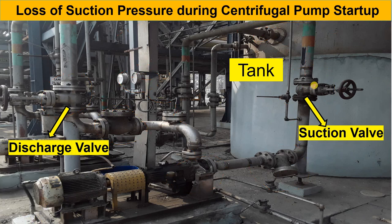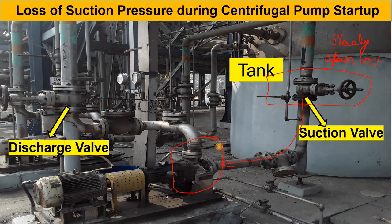Now, how do you operate the centrifugal pump during startup? First of all, you will open the suction valve completely — 100% — slowly. Your fluid will flow from the tank through to the pump. Then you start the pump, either from the LCS or from the DCS. Once started, the PG will show a reading. Monitor the pressure, and then open or throttle the discharge valve slowly.